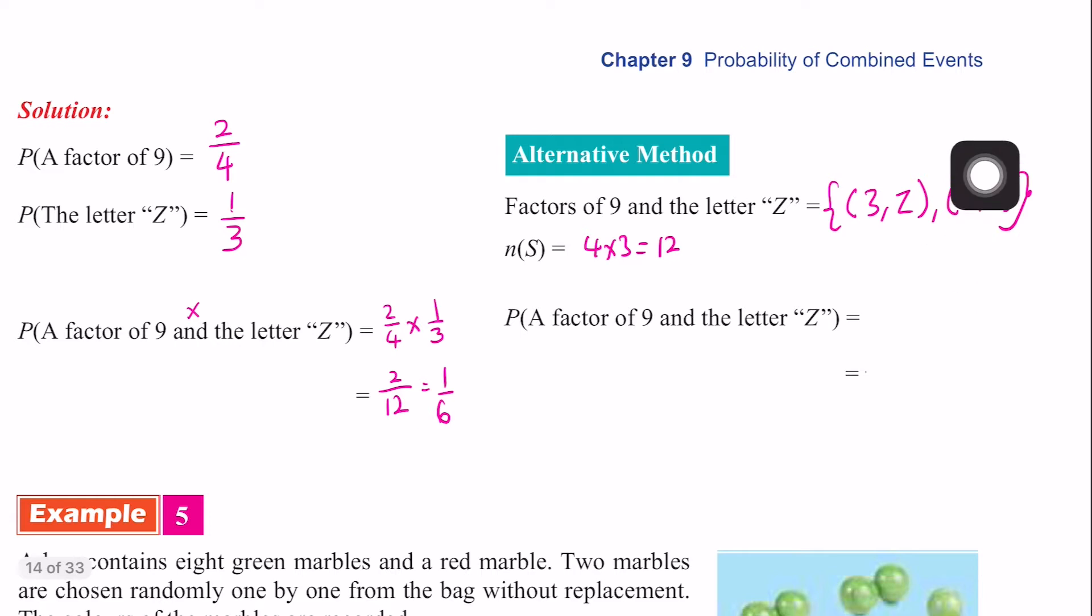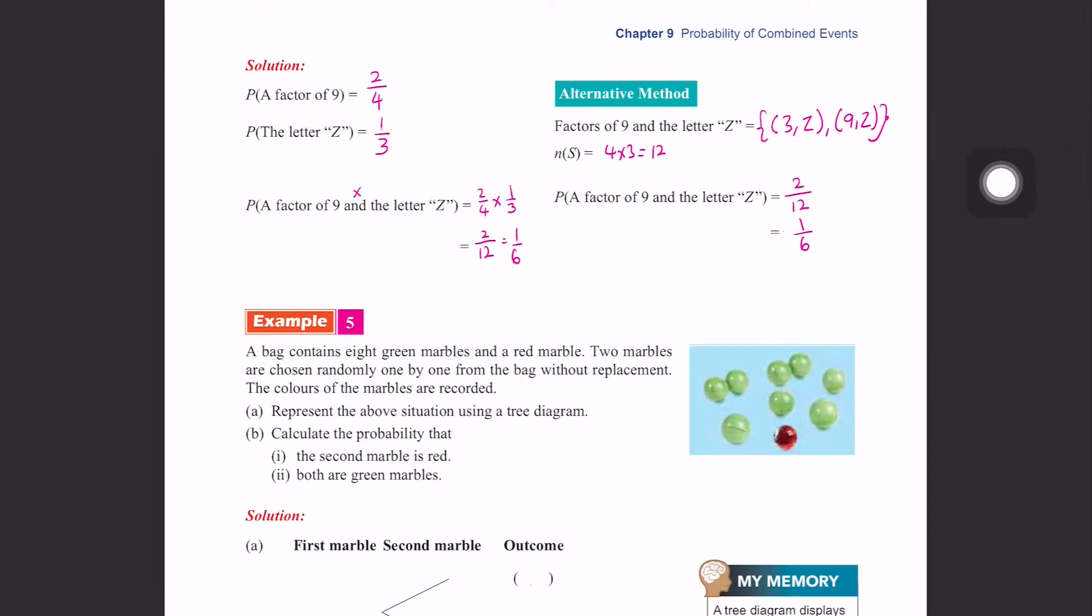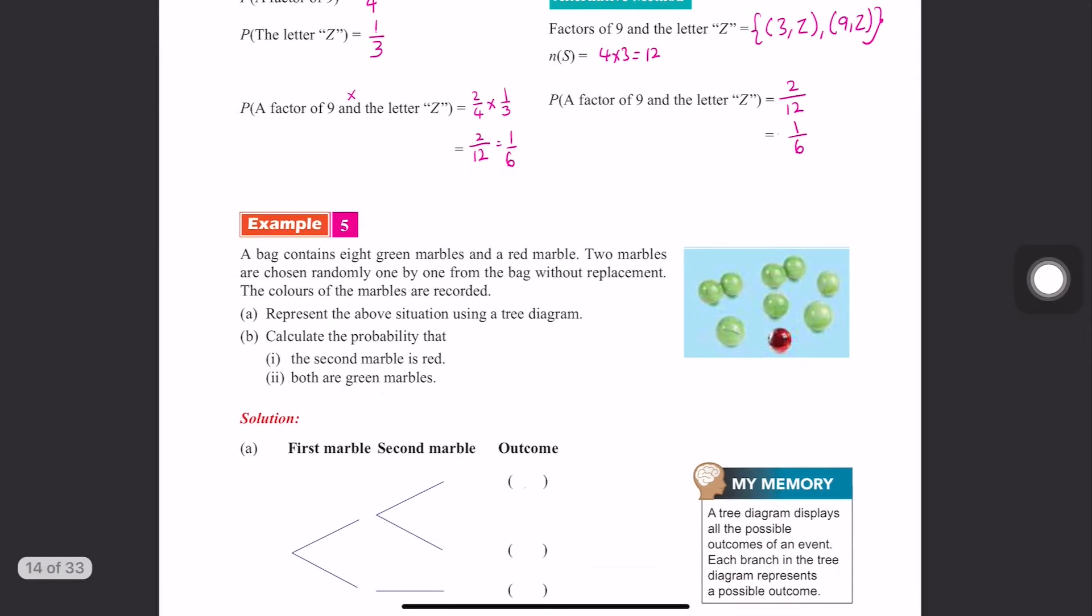And then, we already got 4 times 3 is 12. So we know that these factors are 1, 2. 1, 2. 2 from 12. So simplify, 1 over 6. So it's the same. Up to you. You can answer using the multiplication rule or the alternative method by listing.